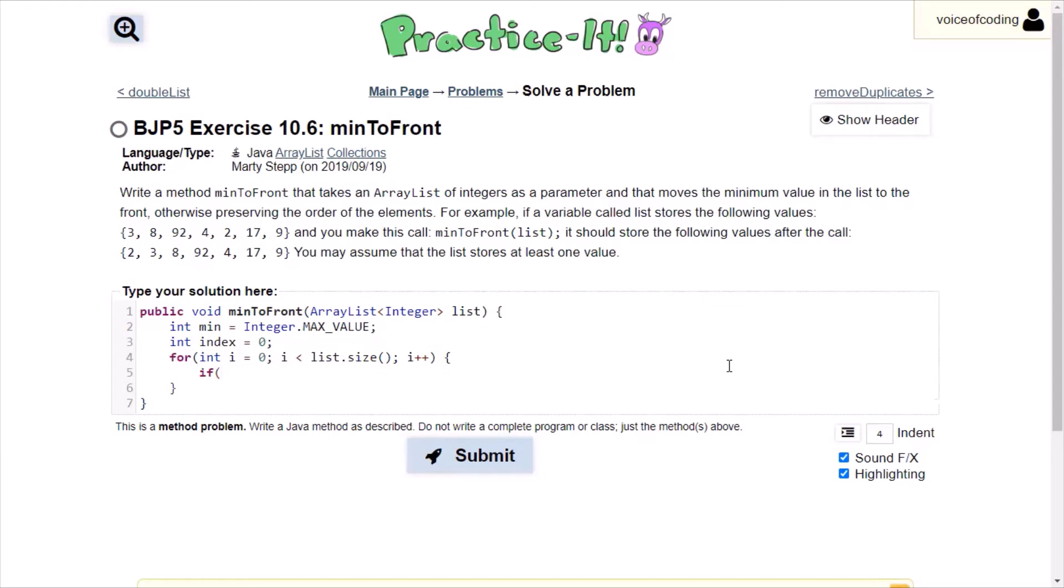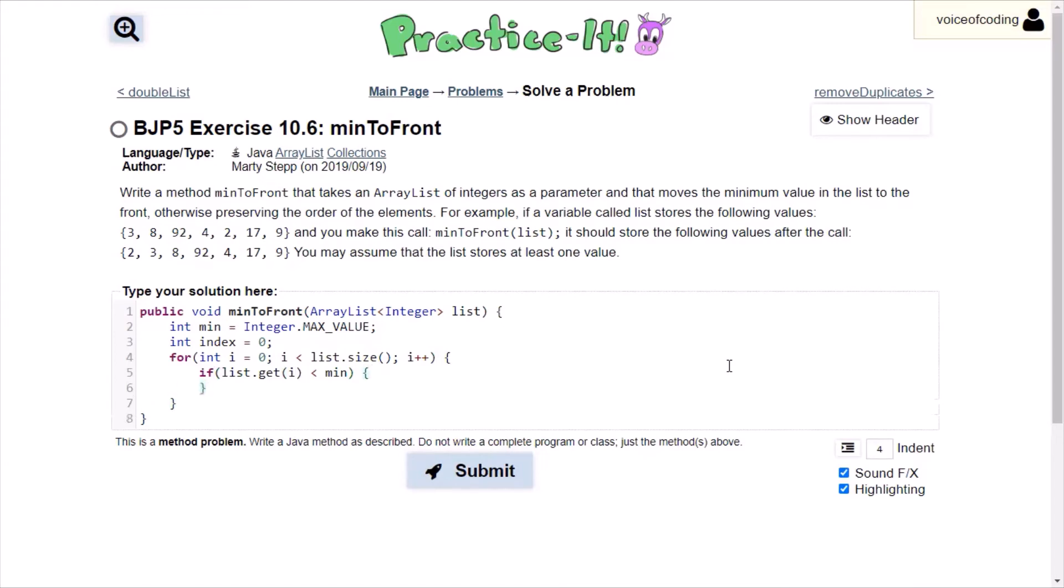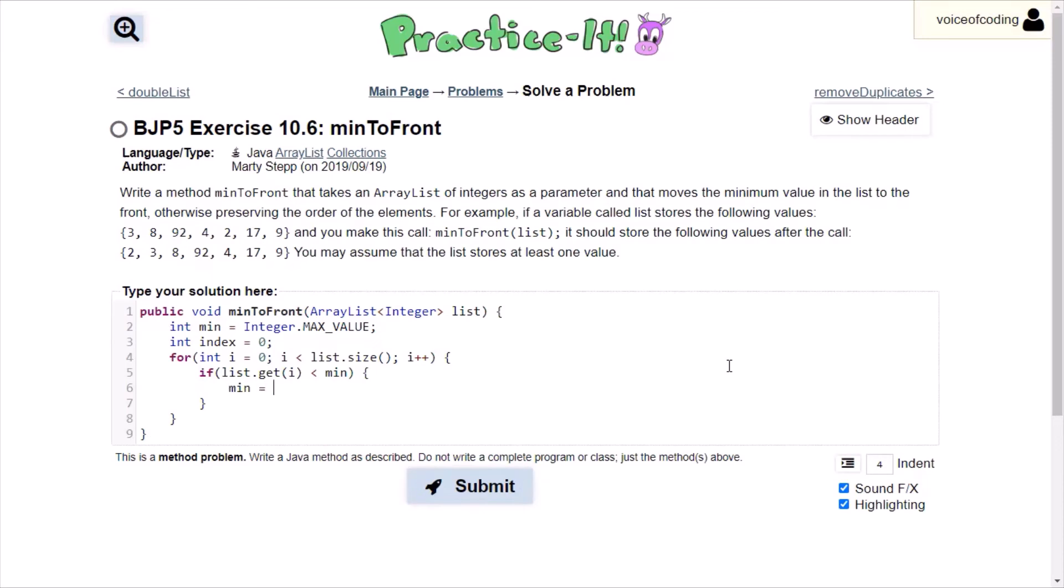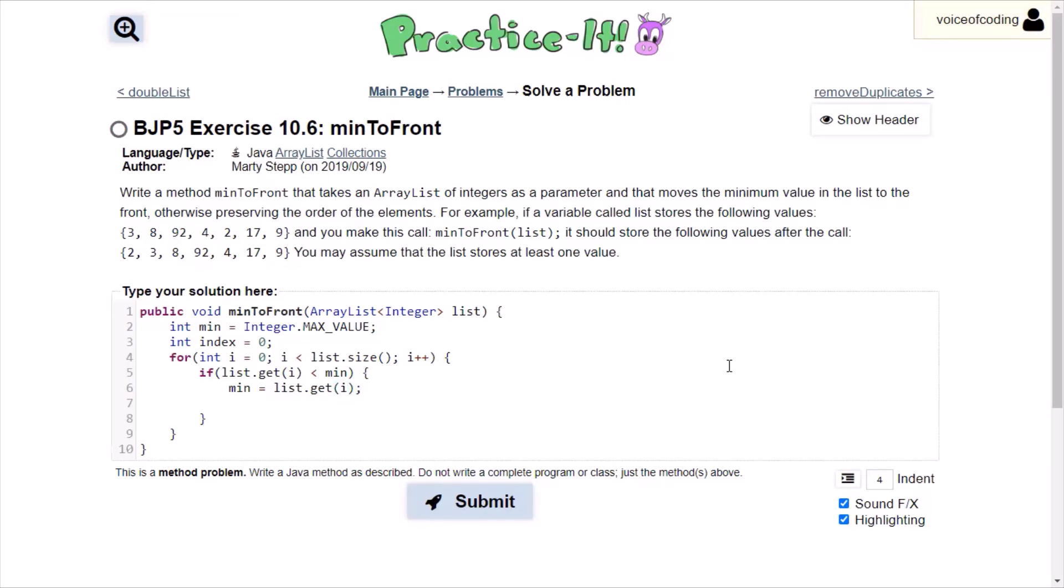If list.get(i) is less than min, then it must be stored as the new min. So we'll be doing min equals list.get(i). And then we will be setting the index equal to i. So now we have our minimum value and we have our index.